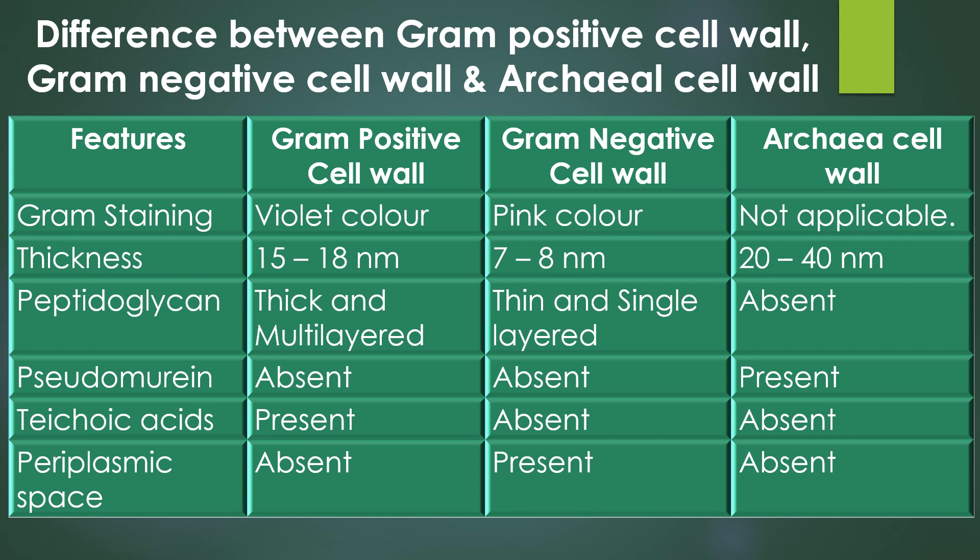The thickness of the archaea cell wall is 20 to 40 nanometers. Peptidoglycan is present in both gram-positive and gram-negative bacterial cell walls — thick and multi-layered in gram-positive, and thin and single-layered in gram-negative. Peptidoglycan is completely absent in the archaea cell wall.